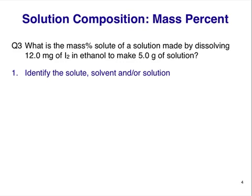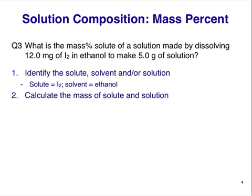The first step is to find the relevant information in the question — we need to identify the solute, the solvent, and/or solution. In this case, the solute — the substance being dissolved — is the iodine. Note it makes no difference that it's written as I2. The iodine is being dissolved in ethanol, so ethanol is the solvent. The mass of solute is 12.0 milligrams and the mass of solution is 5.0 grams, both from the question. We don't have the mass of the solvent separately, but that's okay, because what we really need is the mass of the solution and the mass of the solute.